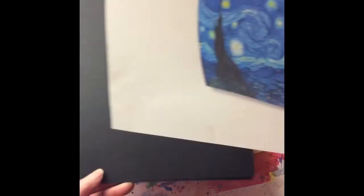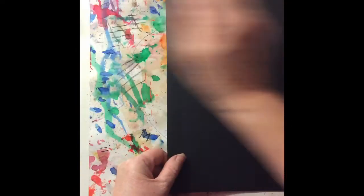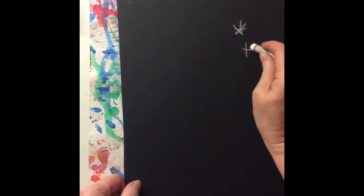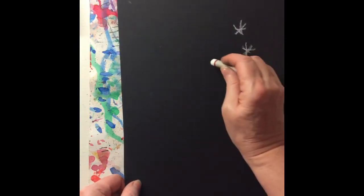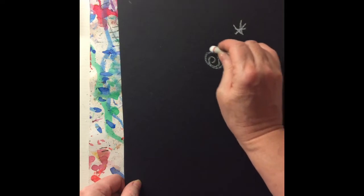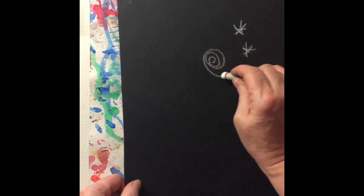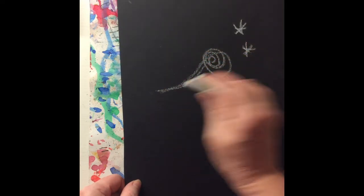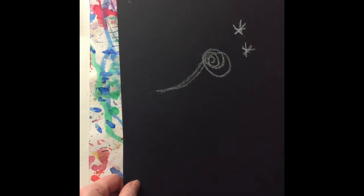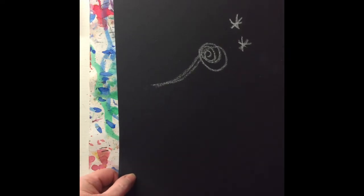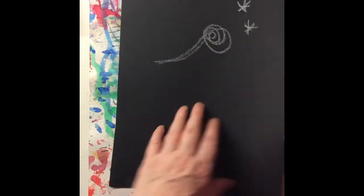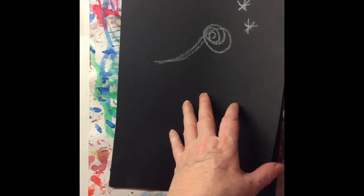We'd normally draw a star something like this, but Van Gogh's stars are more like this, with swirls. Astronomers say that Van Gogh's stars are more like stars really are, so that's what we're going to try and do.